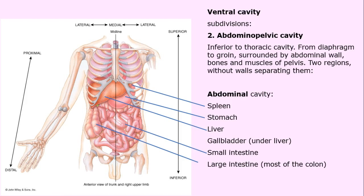Still on the ventral cavity — now looking at the abdominal pelvic region. There are two words: the abdominal, which is the abdomen, and the pelvic, which is below the abdomen. It is inferior to the thoracic cavity, meaning it's below. From the diaphragm to the groin, it's surrounded by the abdominal wall as well as bones, muscles, and the pelvis.